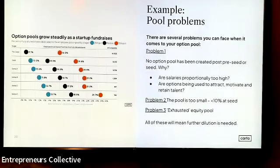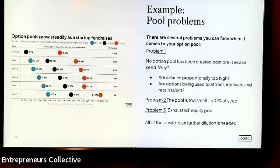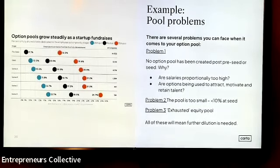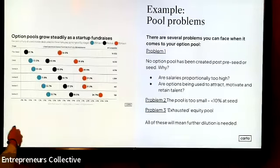The option pool is one of the most important, most early, and most irreversible decisions you can make as a founder, so getting it set up correctly from day one is really important. Data from Carta shows how option pools evolve over time — there's no hard and fast rule, but 10–15% is typical when a first institutional investor comes on board. You expect to see it increase over time as you take on more staff and give bigger equity packages to more senior people.